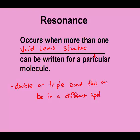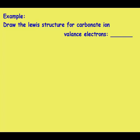So let's see what that means. First we need to draw the Lewis structure for carbonate. Carbonate is a polyatomic ion. We have CO₃ with a negative two charge.